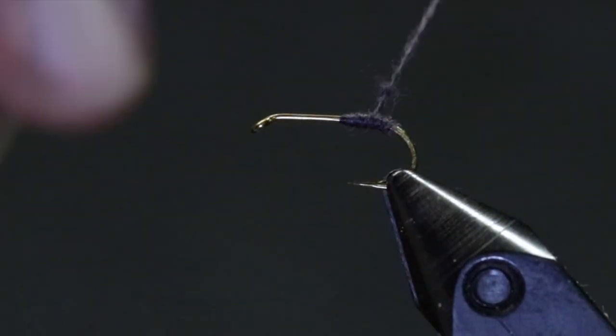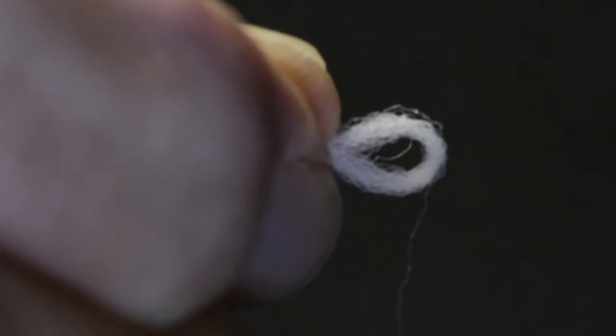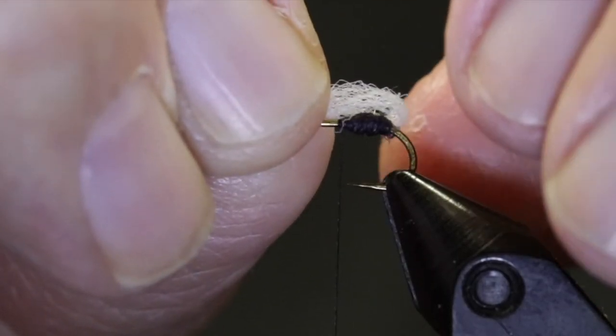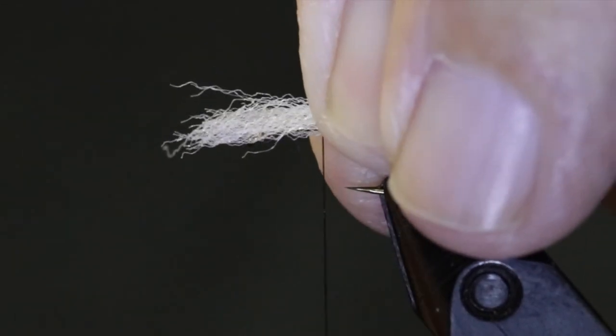For the wing, I'm using polypropylene floating yarn. There's lots of materials you can use, but I like the poly yarn because it's easy to form a loop. White's the color I'm using, but you could get away with a light gray or even a light tan.